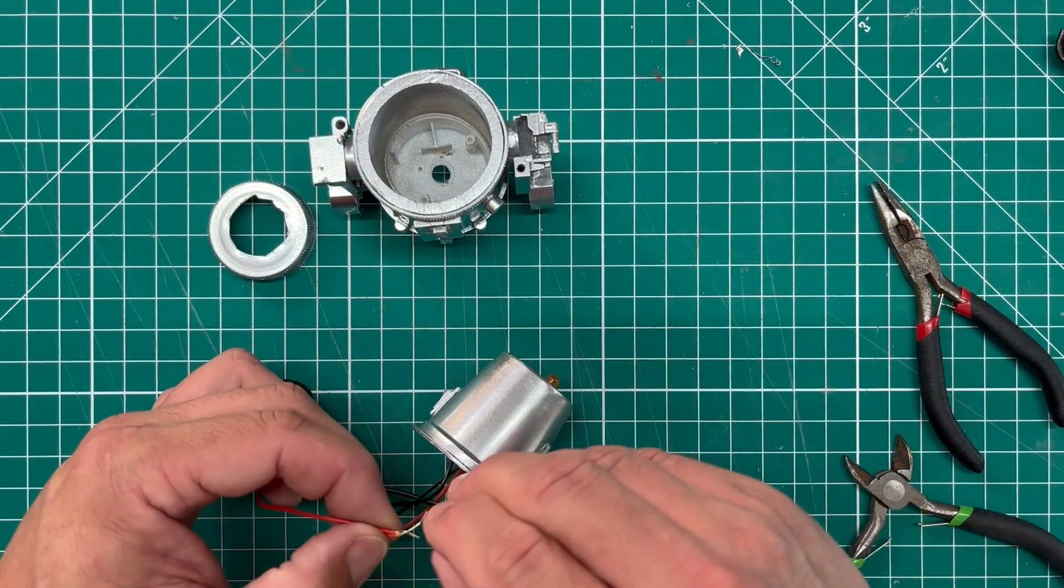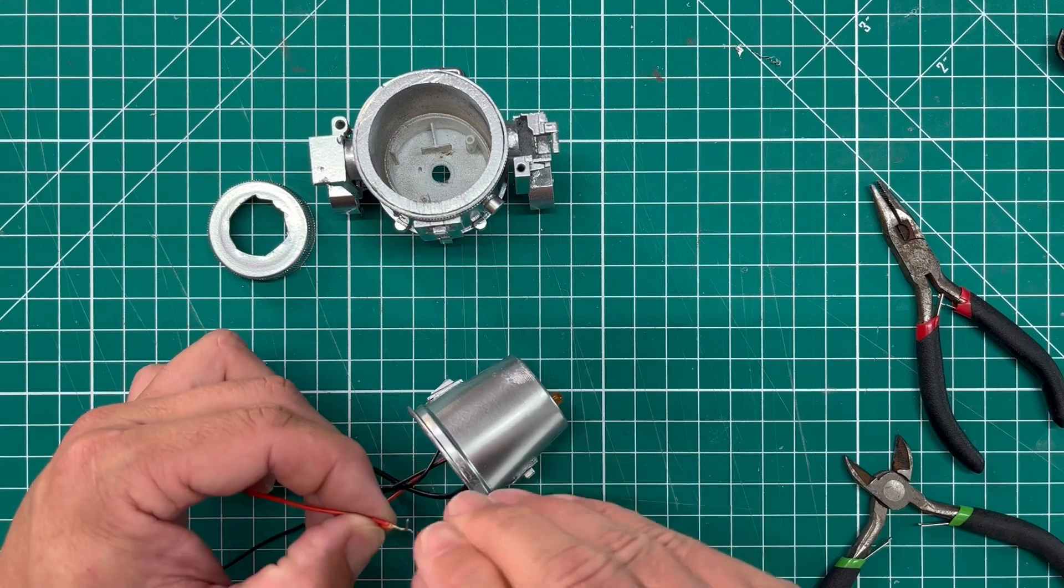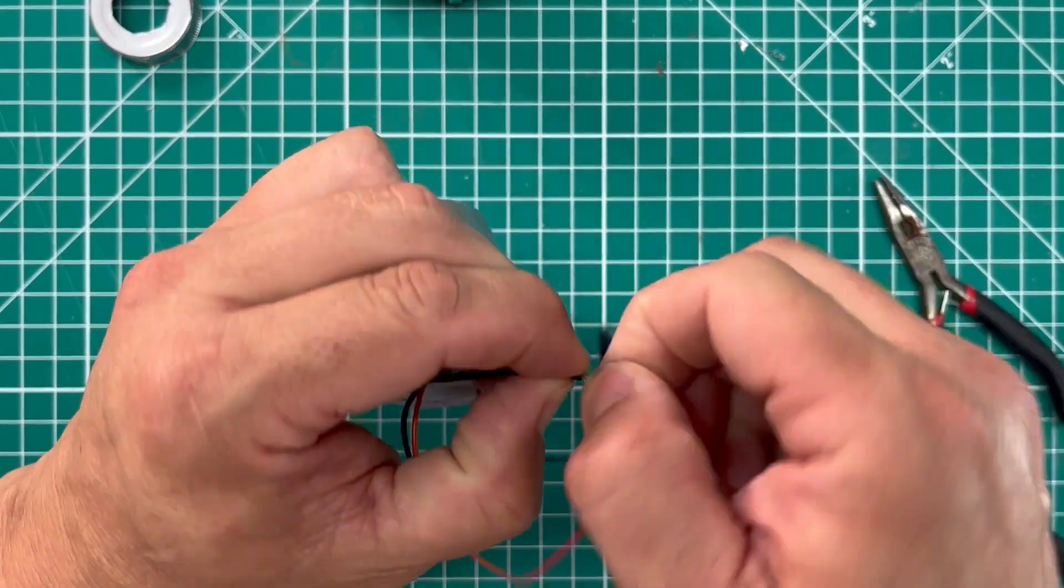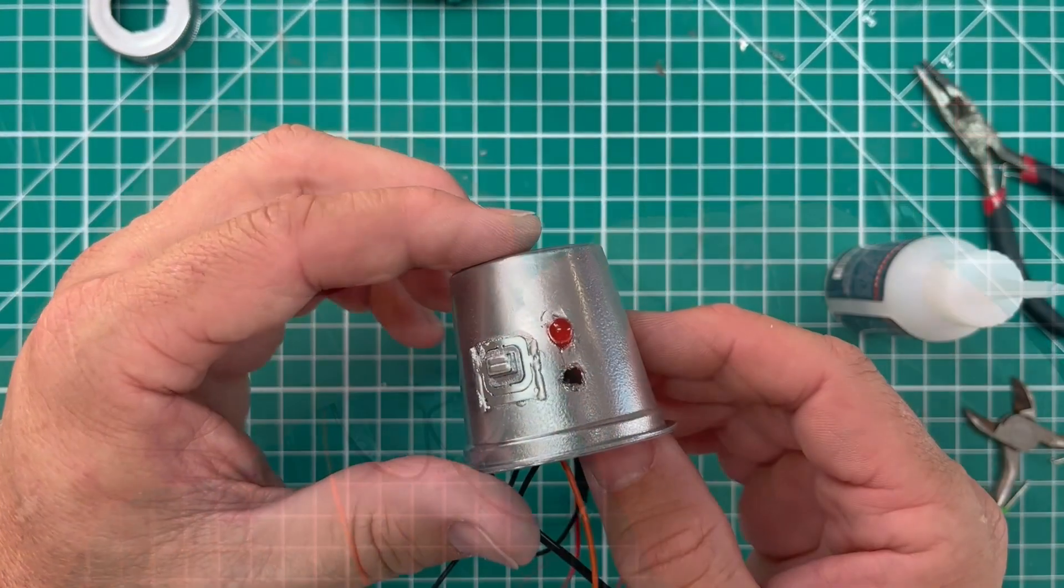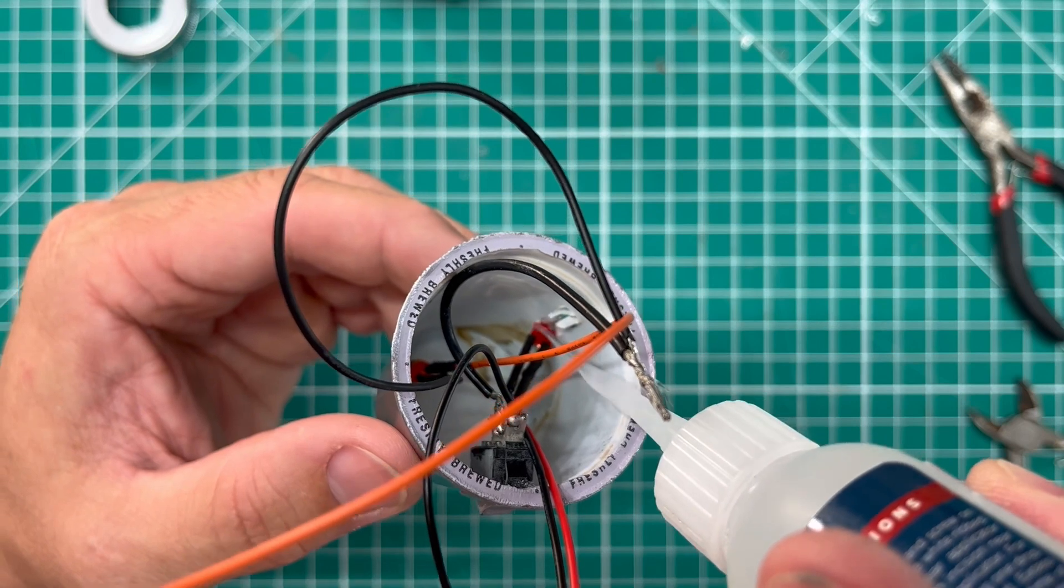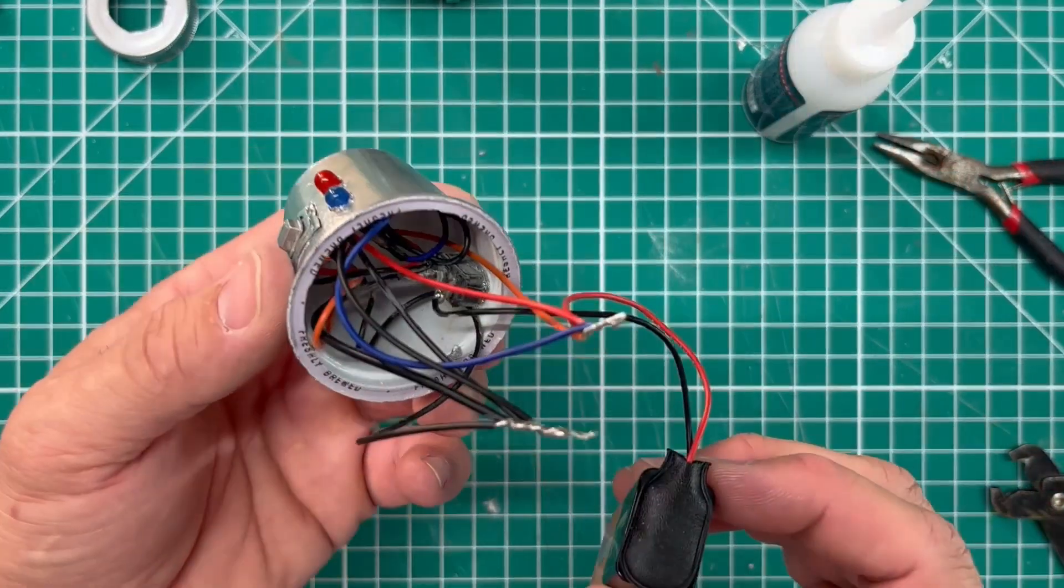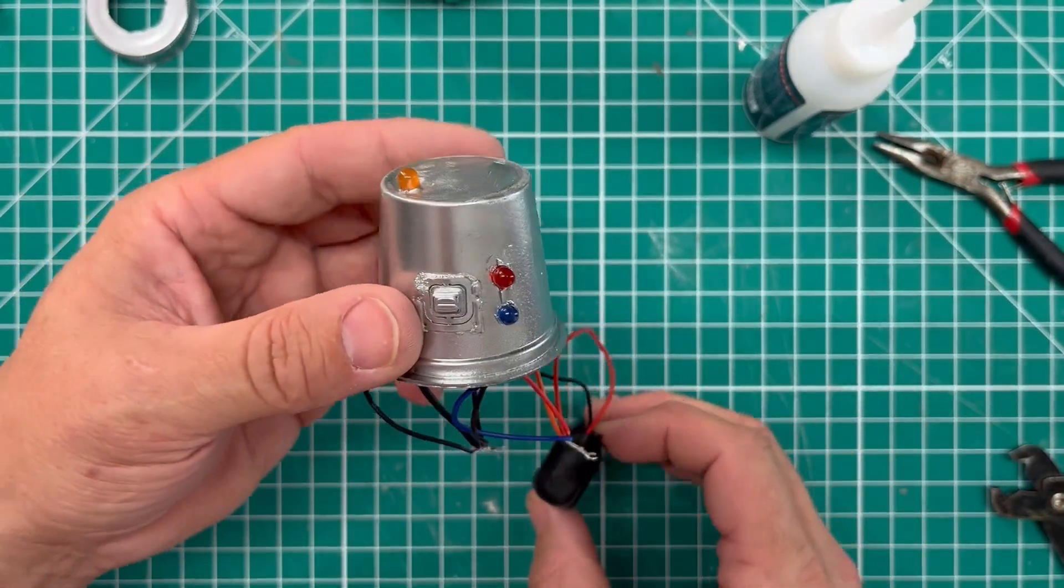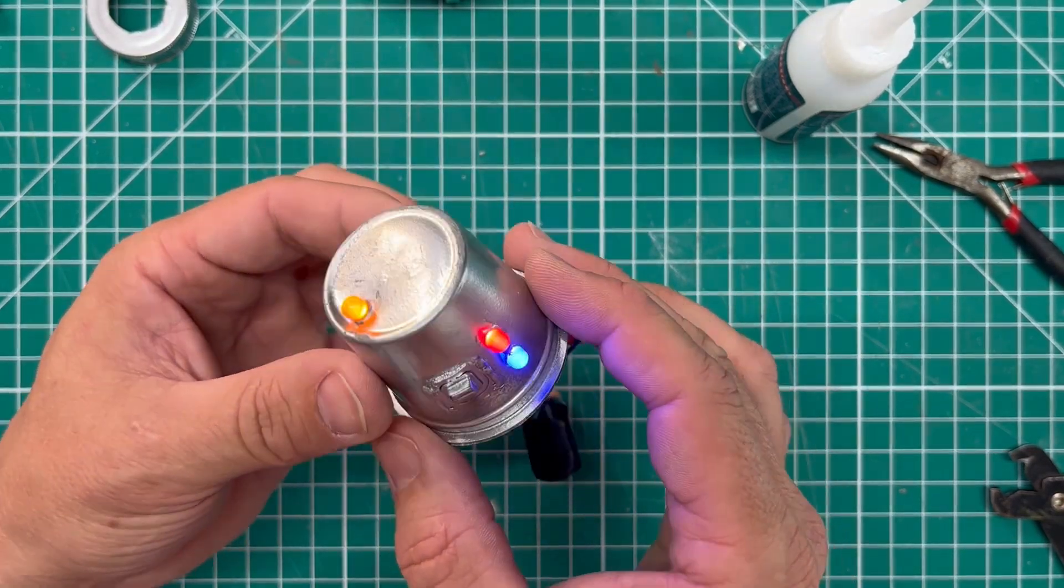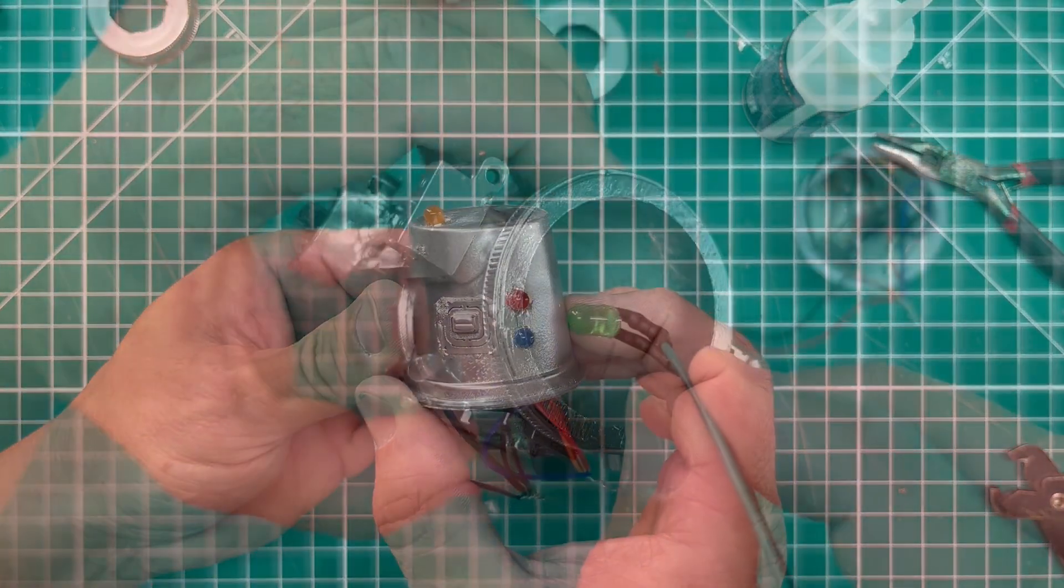Once that's in place I go ahead and splice or actually shave the end of the insulation off the wire and then I can go ahead and start making some of those connections. Moving on I add a red LED and a blue LED in the head and then I glue those in place and I just keep repeating that same process of wiring. Here I'm testing out the LEDs and I love what I'm seeing.